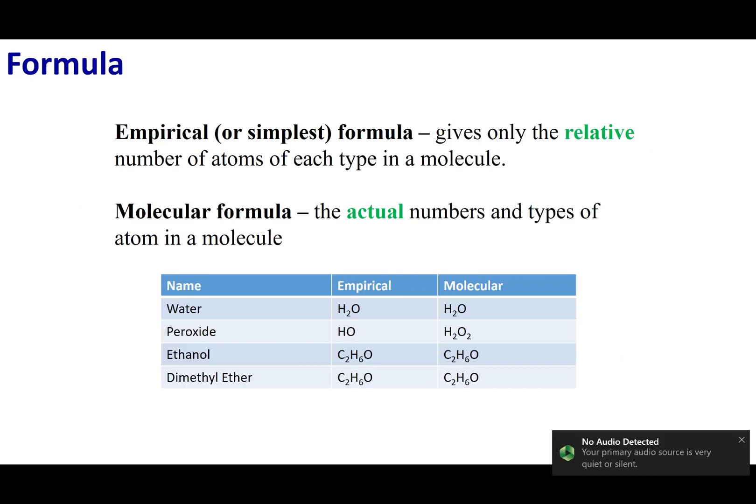So when we talk about this package of atoms, we're going to write down the chemical formula. Now there are two main ones we want to cover in this lecture, and that is the empirical formula and the molecular formula. Now the empirical formula is usually used when you're talking about ionic compounds. It gives you the smallest ratio of all the atoms in that chemical compound.